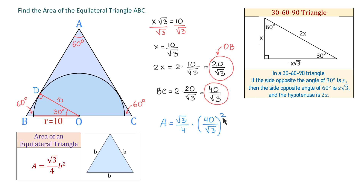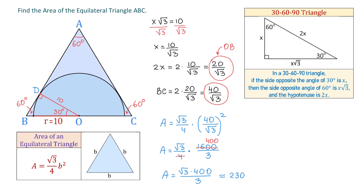To raise this fraction to the second power, we raise both the numerator and the denominator to the second power. So A equals square root of 3 over 4 times 1,600 over 3. Then A equals square root of 3 times 400 over 3, which is approximately 230.9 square units. So we found the area of the triangle and the problem is completed.